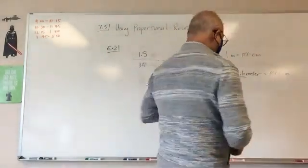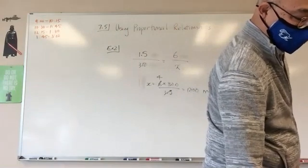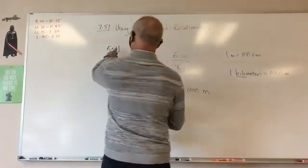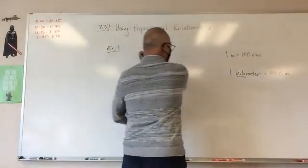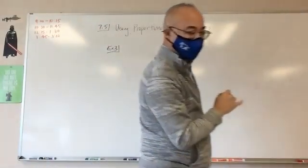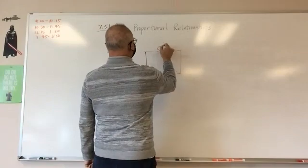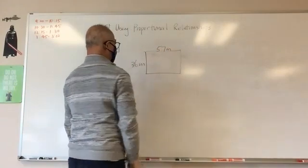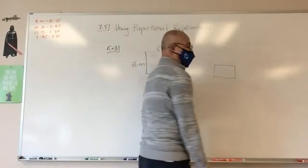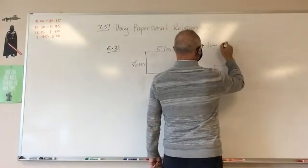Example number three. The Lincoln Memorial in Washington, D.C. is approximately 57 meters long and 36 meters wide. Make a scale drawing of the base using the following scale: 1 centimeter is equal to 15 meters. So I am going to do 57 and 36, and this is the actual Lincoln Memorial. I'm going to make a scale drawing here.